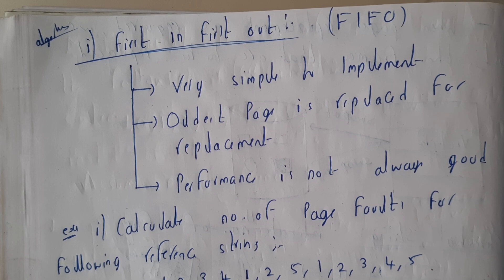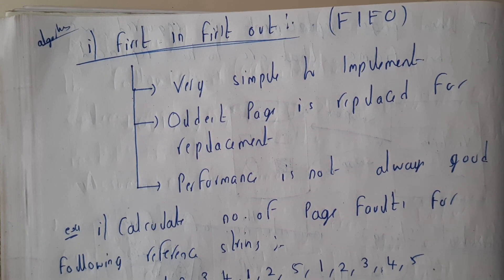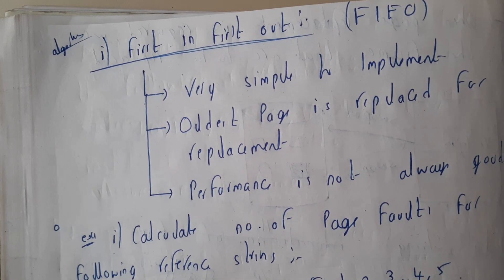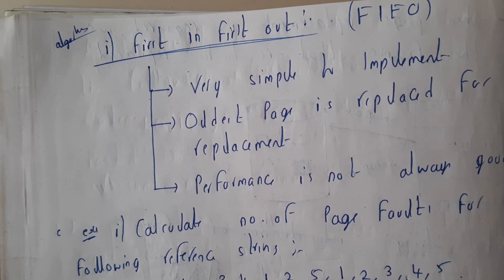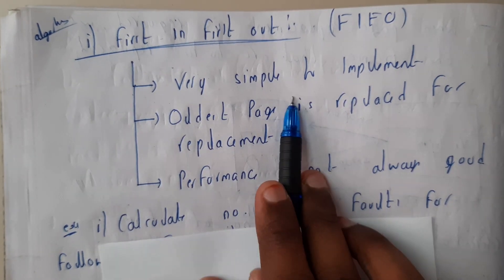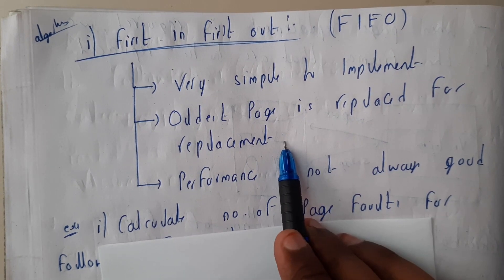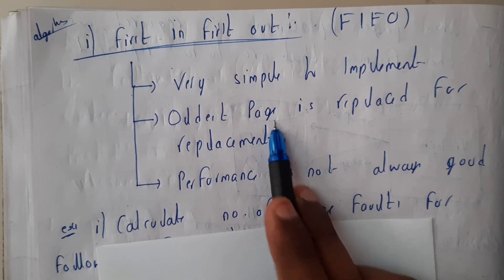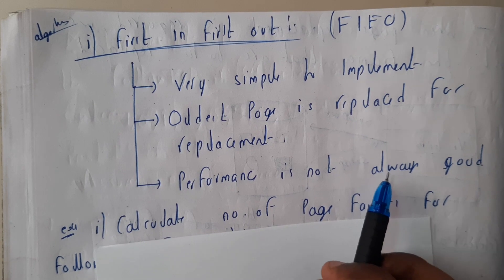The first algorithm we'll go through is First In First Out (FIFO). As the name suggests, whatever comes in first is ready to go out first. The key points: it is very simple to implement, and the oldest page is replaced by the algorithm. However, its performance is not good.